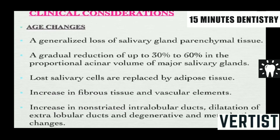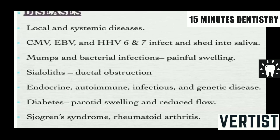With age, there is a generalized loss of salivary gland parenchymal tissue, with a gradual reduction of 30% to 60% in the proportional acinar volume of the major salivary glands. Lost salivary cells are replaced by adipose tissue, and there is an increase in fibrous tissue and vascular changes. Additionally, various diseases can affect the salivary glands, including local or systemic conditions such as mumps, and endocrine, autoimmune, infectious, and genetic diseases.